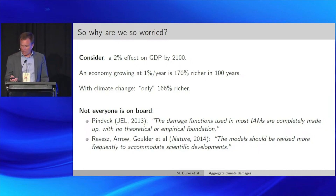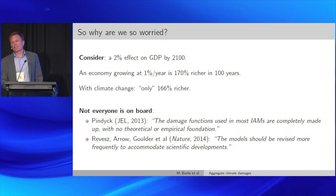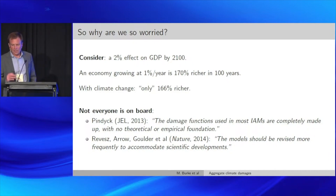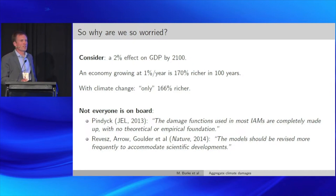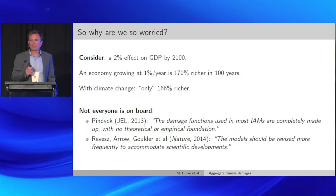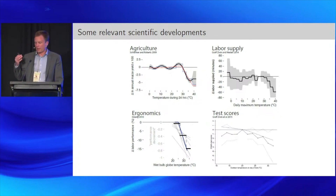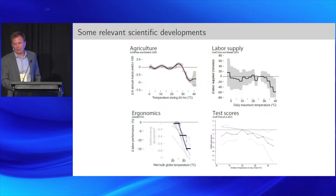Here are two key quotes about a decade old — this was a recognized problem even then. Bob Pindyck, the most vocally critical, said the damage functions used in most IAMs are 'completely made up with no theoretical or empirical foundation.' A more recent paper stated the models should be revised more frequently to accommodate scientific developments. Tama just gave a whirlwind tour of many scientific developments from the Climate Impact Lab; Max summarized the Berkeley-RFF group.